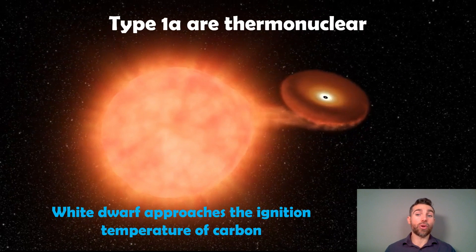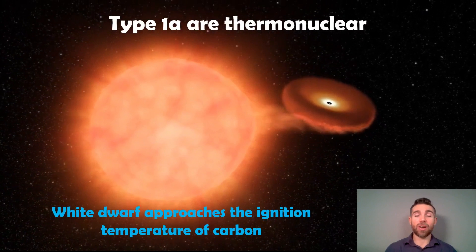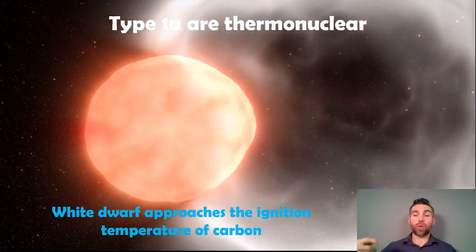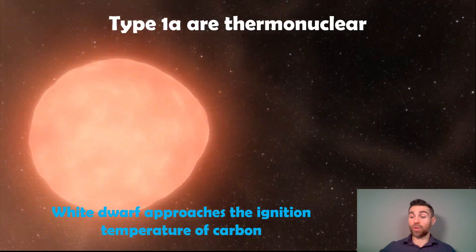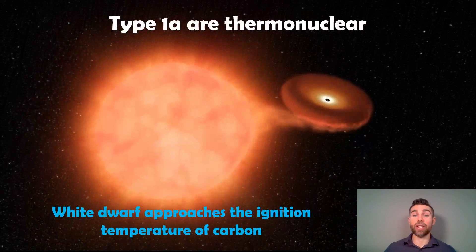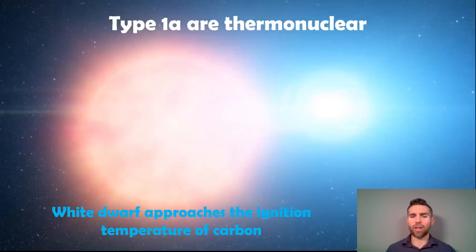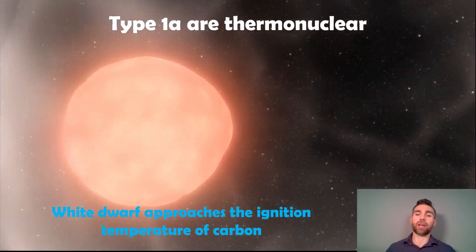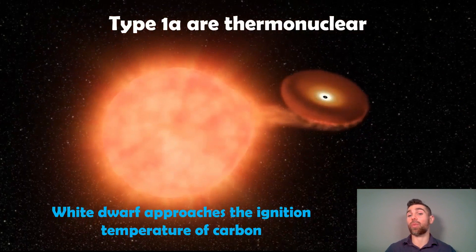Type 1a is thermonuclear. This means you basically have a white dwarf star and a red giant star. When the red giant star swells up, some material is pulled off it onto the white dwarf. The white dwarf can only grow to a certain size before it gets too hot, because gravitational forces are trying to collapse it — there's no outward pressure as you'd normally get in a star. You do have electron degeneracy, but you can essentially overcome that. Once it starts heating up and reaches the ignition temperature of carbon, the entire white dwarf star goes into a thermonuclear explosion, which is your Type 1a.